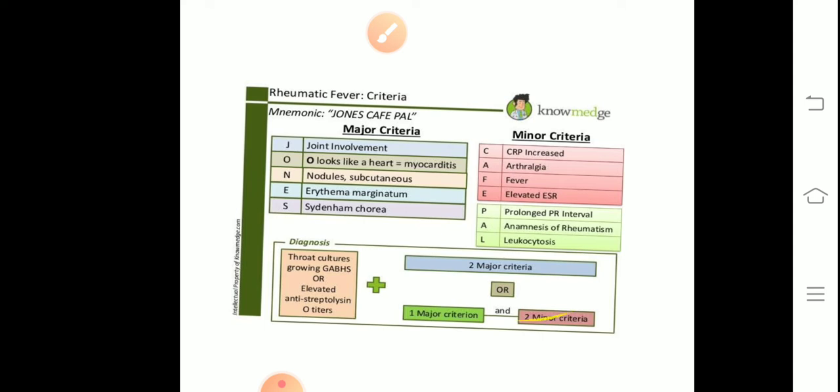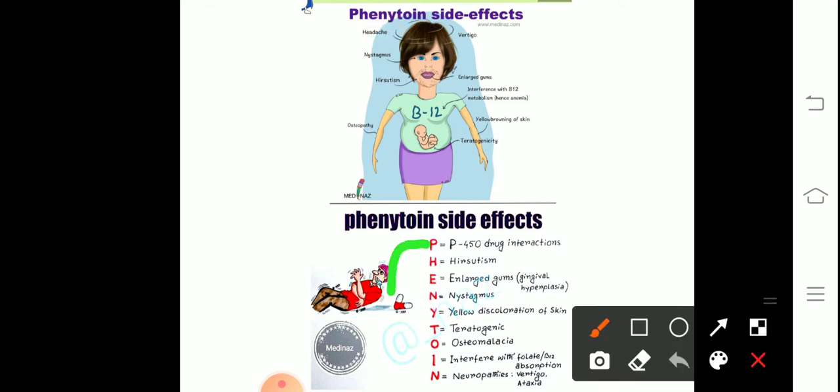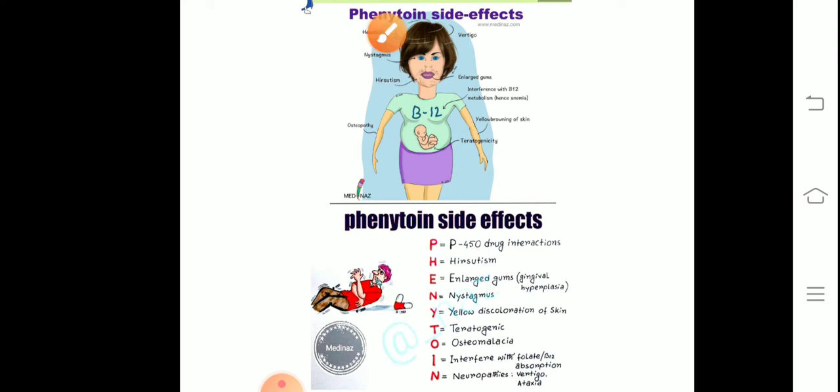Next, phenytoin side effects, very easily and most important. The question most of the time in pharma comes on phenytoin. Now side effects of phenytoin you remember by the name itself PHENYTOIN: P - P450 drug interactions, H - hirsutism is the abnormal development of the hair on the body, E - enlarged gums or gingival hyperplasia, N - nystagmus that is the abnormal coordination of the eyeball, Y - yellow discoloration of the skin.